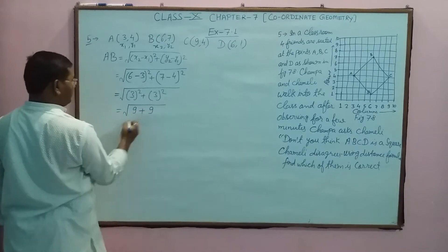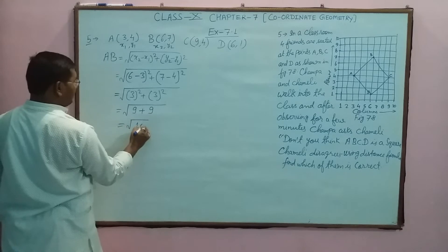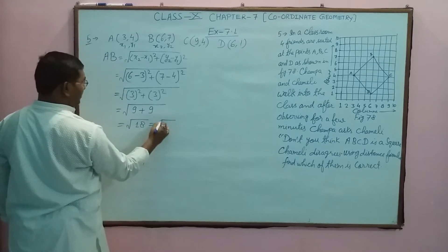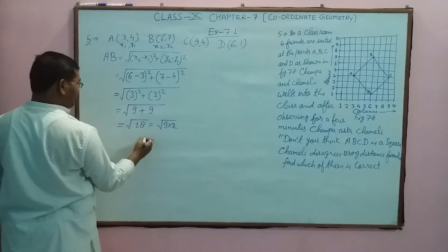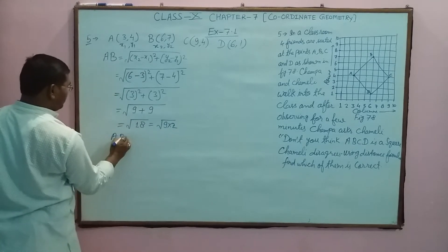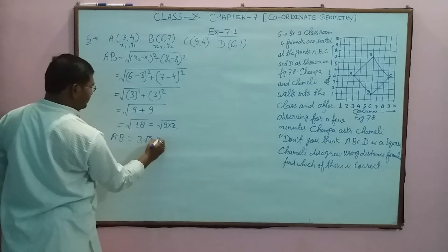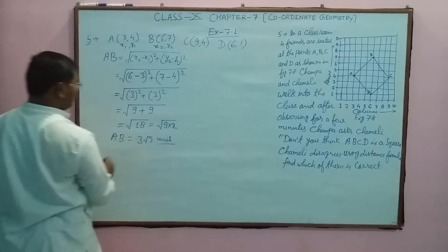Square root 18, or we can write it as square root of 9 into 2. So it will be AB equals 3 root 2, 3 root 2 units.